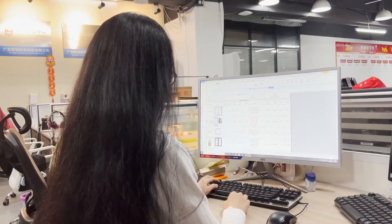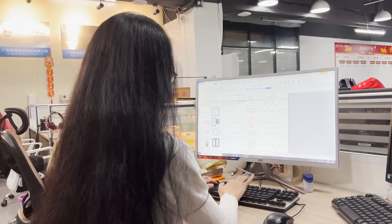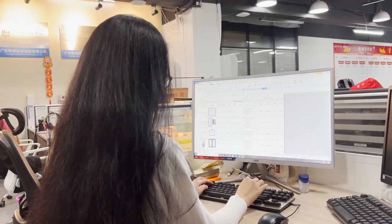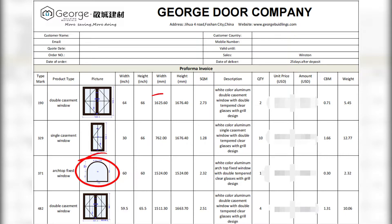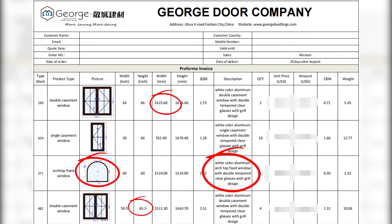Therefore, we make our quotations for our customers, which include window drawings, sizes, quantity, and a description about the windows to show what profile or glasses we use, as well as CBMs and weight — this will help customers calculate the freight to their home.